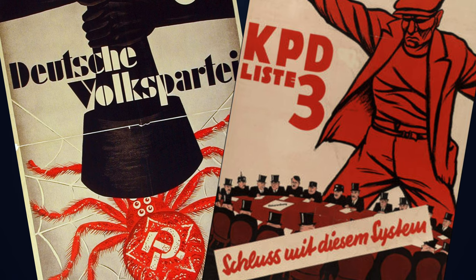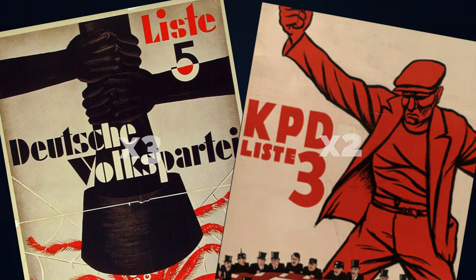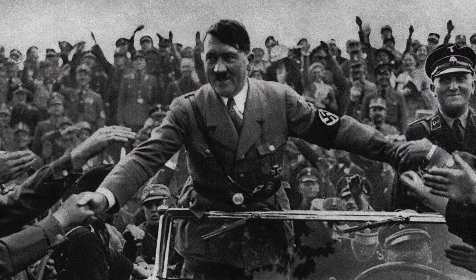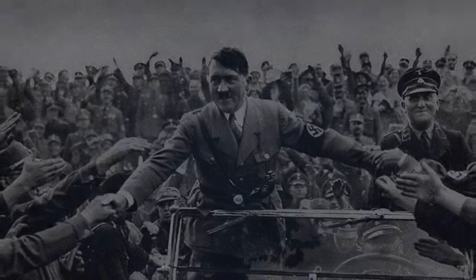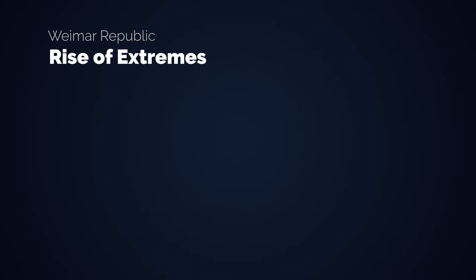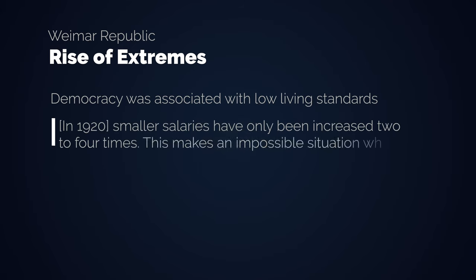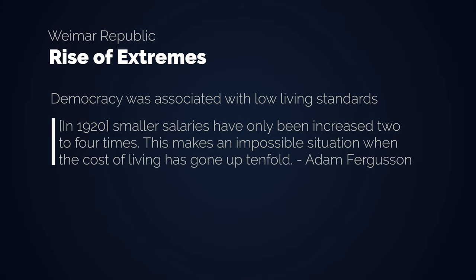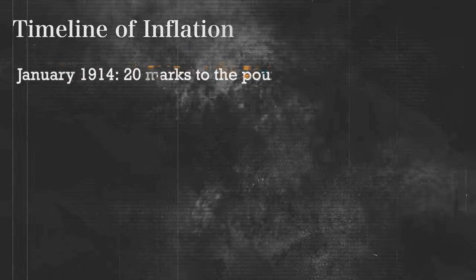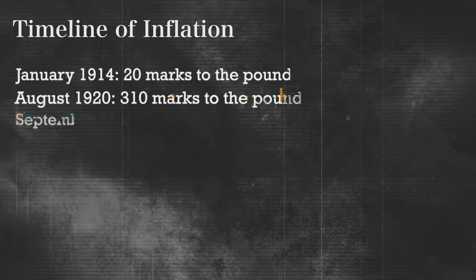The falling living standards turned into societal unrest and political division. The far left and far right were on the rise — the German National People's Party on the far right trebled its votes while the far left doubled theirs. I think this societal division is another parallel we are starting to see today. Hitler's rise was encouraged by what had happened; people were getting tired of democracy and associated that state form with their falling living standards. In 1920, smaller salaries had only been increased two to four times, making an impossible situation when the cost of living had gone up tenfold. By August 1920 it became clear Germany would be unable to keep paying reparation costs, and the mark fell from 310 to the pound to 400 to the pound within a month.